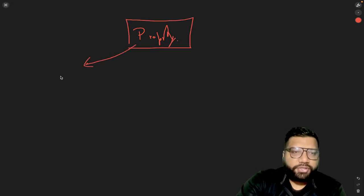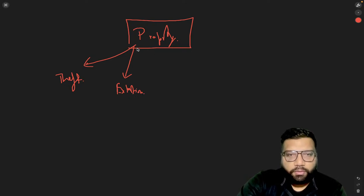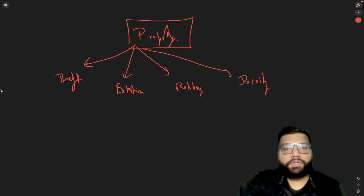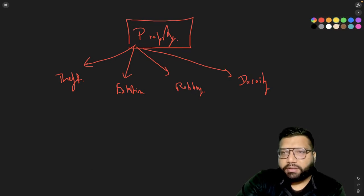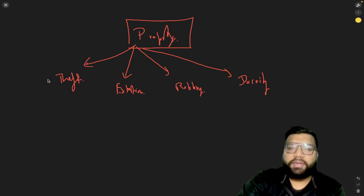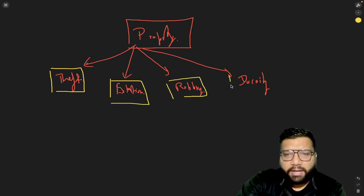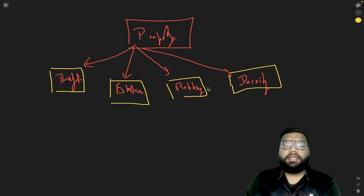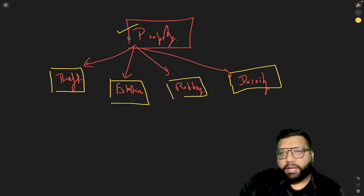In today's class, the very first topic is the concept of theft, followed by the concept of extortion, then robbery, and then dakaiti. So these are the four offenses I am going to discuss one by one. There is one thing which is common in all these offenses — they are all examples of offenses affecting property. Whether it is theft, extortion, robbery, or dakaiti, all of these are property offenses.